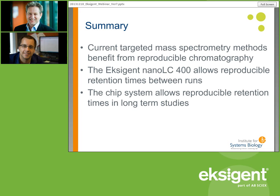Another question: how much protein do you typically inject for a complex sample, and how much less material would you inject by nanoLC versus conventional UPLC with a 2.1 millimeter column? What I usually aim for is about one microgram, and often go less — say 0.5 to one microgram for the nanoLC. For columns with a bigger diameter, you want to go higher, and you can analyze up to 20 micrograms using a 2.1 millimeter column.